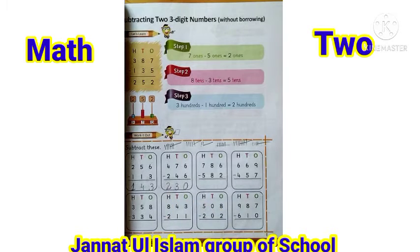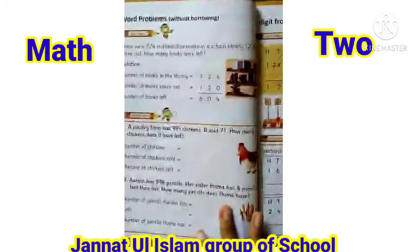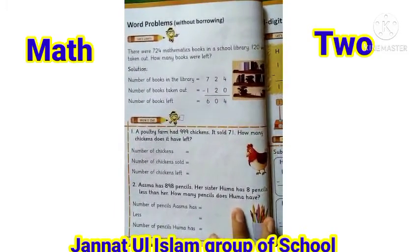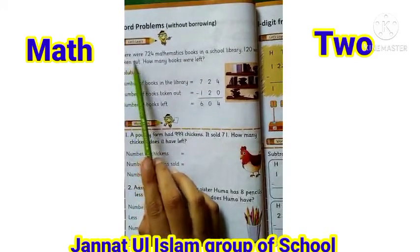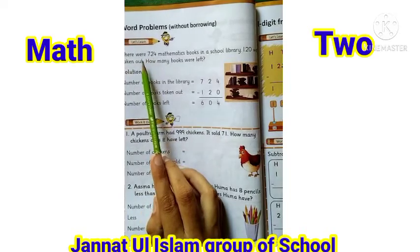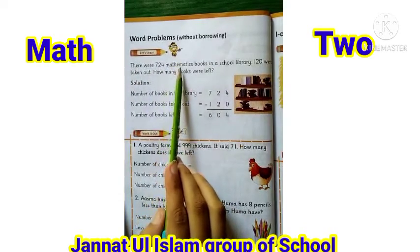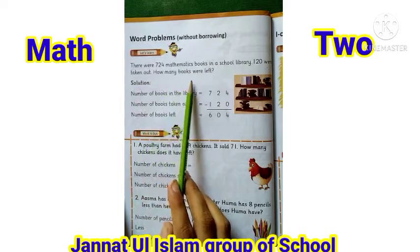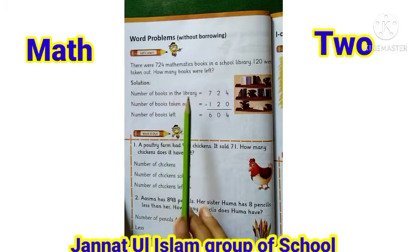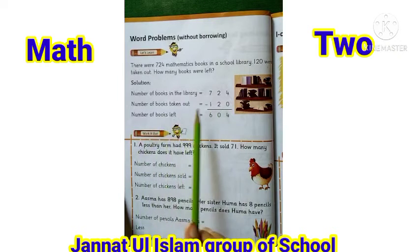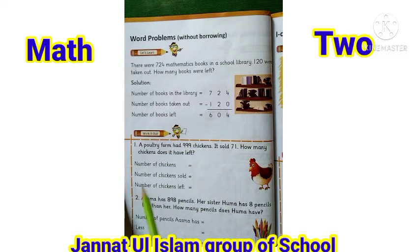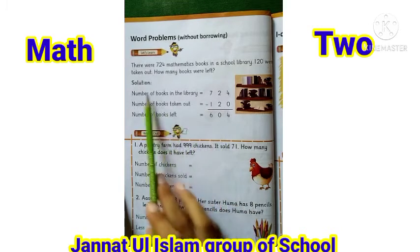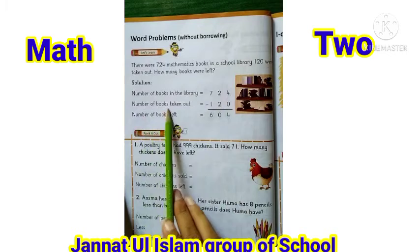تو دیکھیں بیٹا، یہ بہت easy questions ہیں، میں نے آپ کو دو questions کروائے ہیں، باقی آپ اپنی book پر practice کرنی ہے۔ Next page number 58 پر words problems without borrowing ہے: 'There were 724 mathematics books in a school library, 120 were taken out — how many books were left?' سکول کی library میں 724 total books ہیں، ان میں سے 120 books لے لی گئی ہیں، تو باقی کتنی books بچیں؟